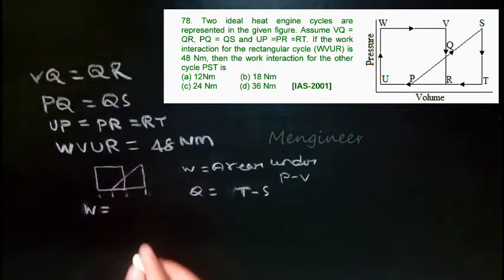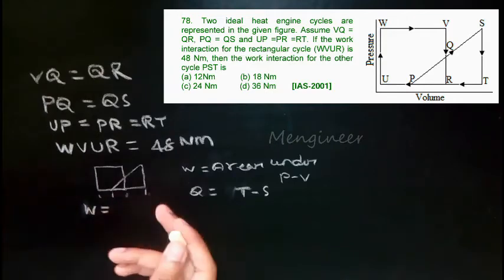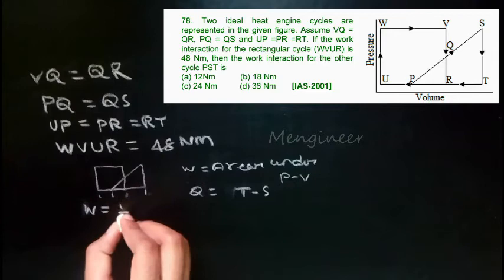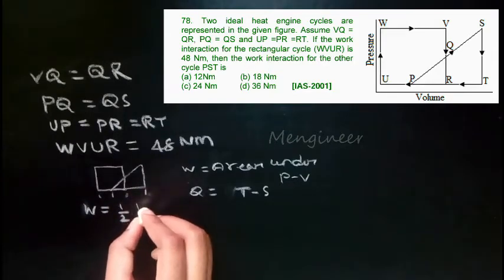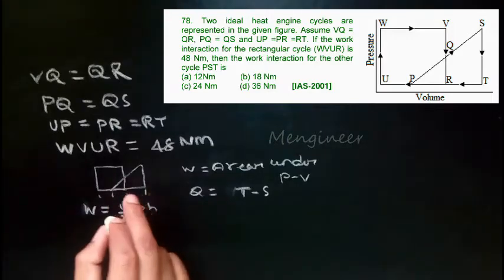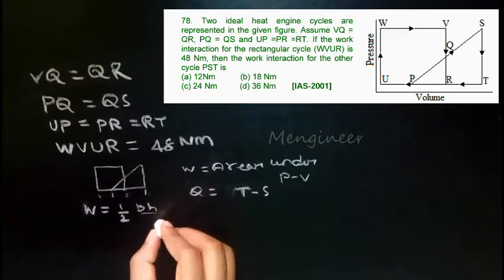So we can directly use the formula for a triangle: half into base into height. Here, we already know it is given that W_VUVUR is 48 Nm. Now just substitute it.